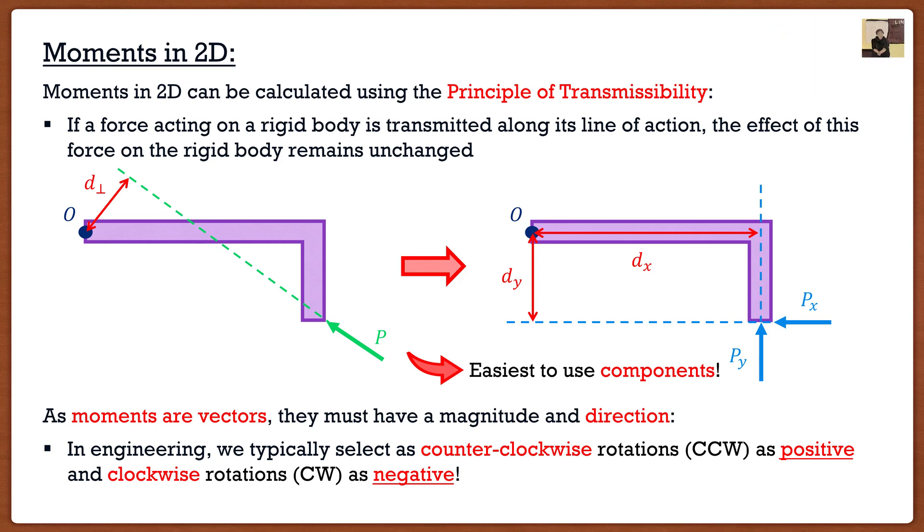So if I were to take the moment about point O using these two components, I would get the following equation for my moment. It would be negative PX times DY. So again, the force times the perpendicular distance. And again, when we did the moment, we saw that PX was clockwise. Therefore, we have the negative sign. And then we go plus PY times DX. Again, for PY, once I did my moment, we said it was counterclockwise. Therefore, it's going to be positive. So it's that sign convention you guys need to worry about. Other than that, moments are actually that simple. So yeah, that's it for this video.